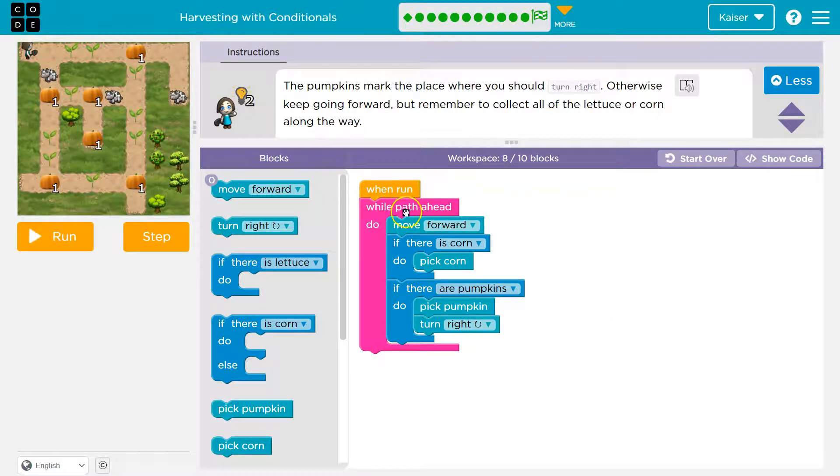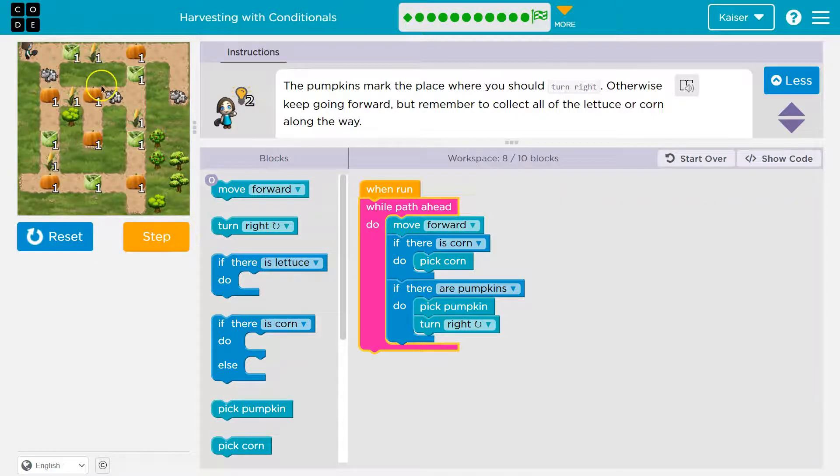Oh. So it sees the pumpkin and says there's still path ahead of me. Oh. Okay. Well, that's fine. Because if there is a pumpkin, what should I do? Well, I should pick the pumpkin, but I know I'm going to turn. So if this is true, if there's a pumpkin, do pick it, but then turn right.